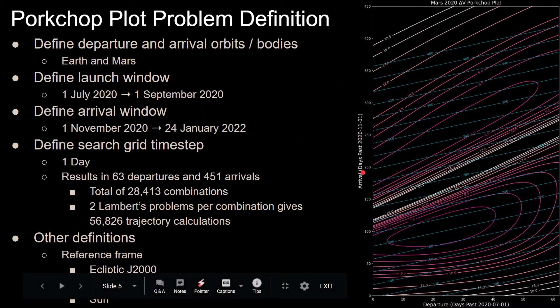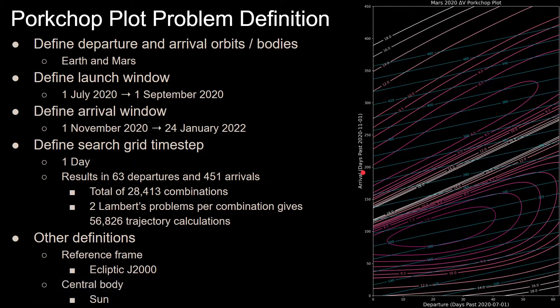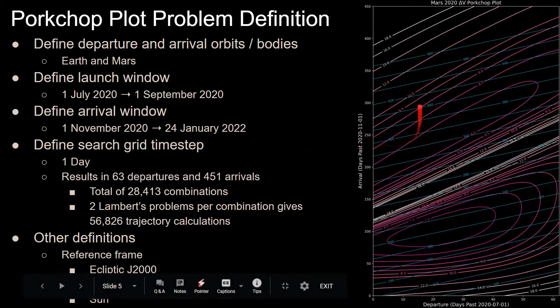You want to define a search grid time step. In what increments do you want to calculate these values? In this case, it's one day. This results in 63 departures and 451 arrivals to consider, which results in a total of 28,413 combinations. But when solving Lambert's problem, you have to solve for the short way and the long way, which is why we have this gap here. So you have to times that by two, which gives you a total of 56,826 trajectory calculations for this pork chop plot.